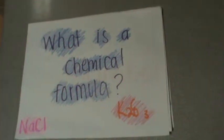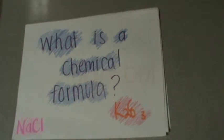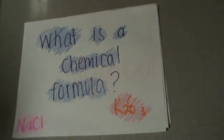What is a chemical formula? A chemical formula is a short form for writing the name of compounds using chemical symbols and numbers.